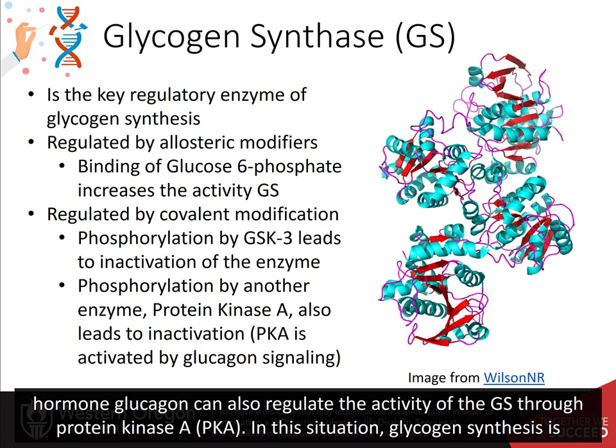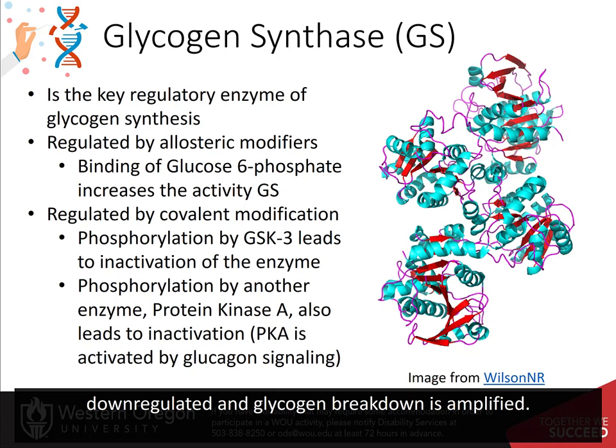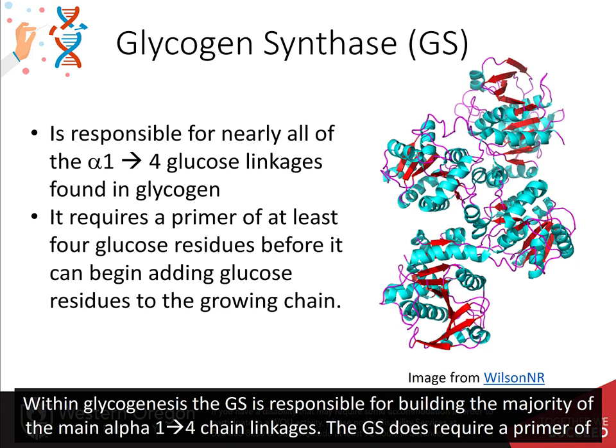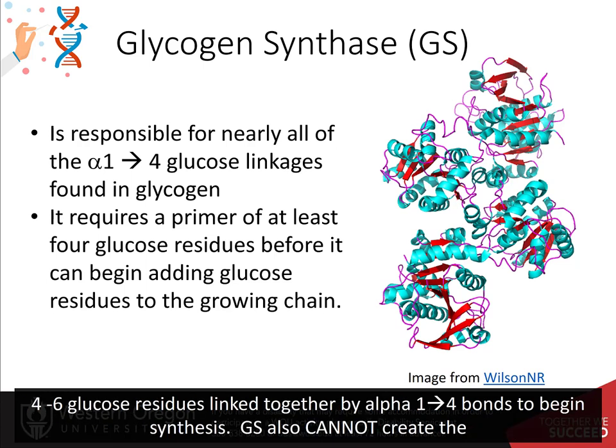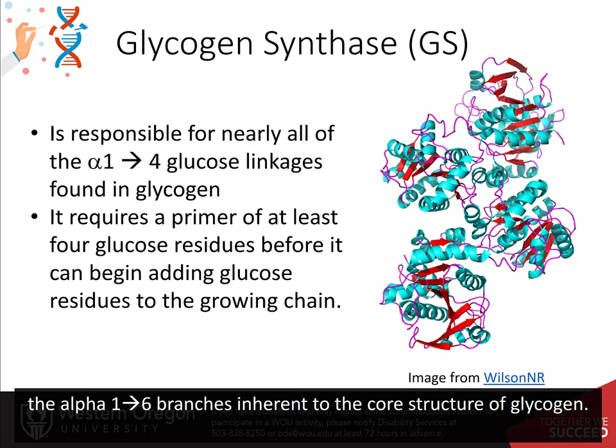In this situation, glycogen synthesis is down-regulated and glycogen breakdown is amplified. Within glycogen synthesis, the glycogen synthase is responsible for building the majority of the main alpha-1,4 chain linkages. The glycogen synthase does require a primer of 4 to 6 glucose residues that are already linked together by alpha-1,4 bonds to begin synthesis. Glycogen synthase also cannot create the alpha-1,6 branches inherent to the core structure of glycogen.